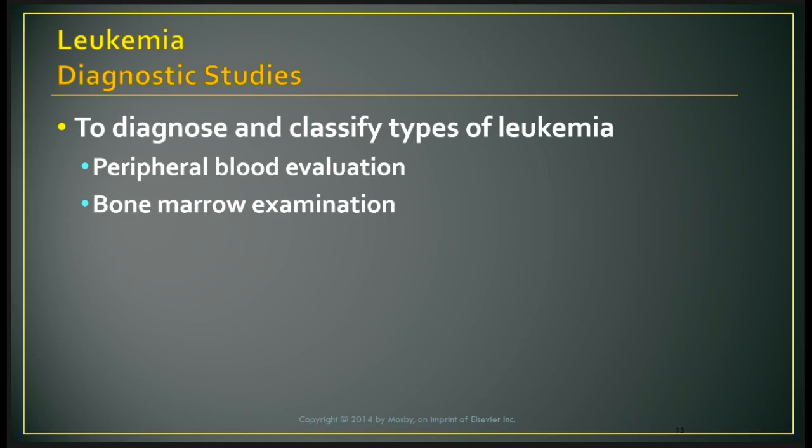To diagnose leukemia, the physician orders a CBC with blood smear, looking at cells under a microscope to give a more definitive diagnosis and determine treatment. A bone marrow aspiration is done to confirm the diagnosis. Other studies include a lumbar puncture and CT scan to detect leukemic cells outside of the blood or bone marrow, and to look at prognosis.